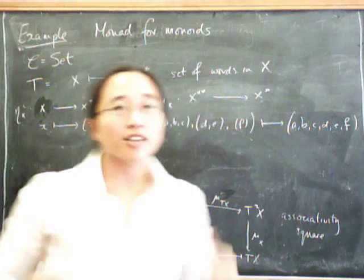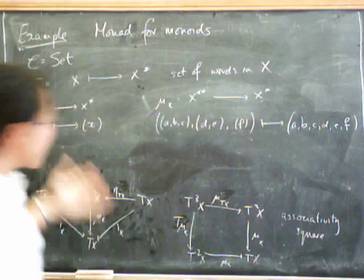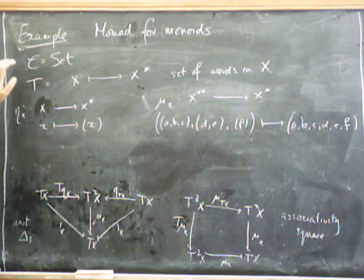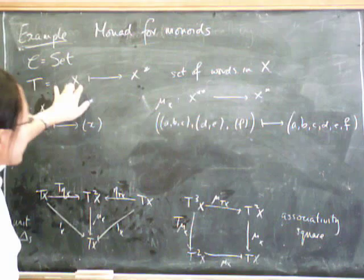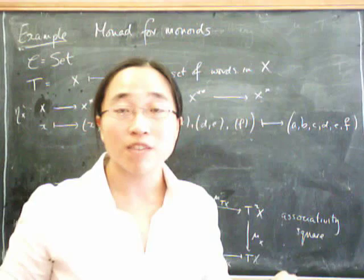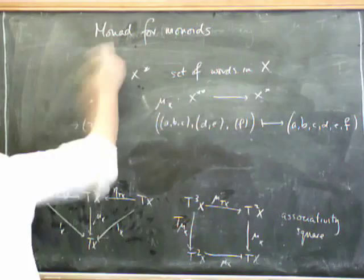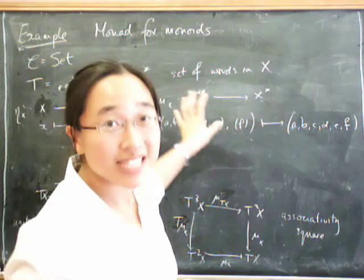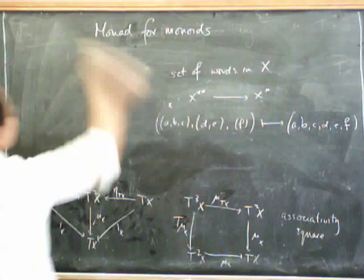So remember that the definition for a monad was that we had a functor on a category C together with natural transformations eta and mu, the unit and the multiplication, satisfying these two diagrams here. And we said that the monad for monoids was this one here where we're working in sets and we've taken the action of the functor to take a set X to the set of words in elements of X. So it remains to be seen what on earth these axioms are saying, and remember that they're not talking about the unit and the associativity of the monoid. That has somehow been encoded into the definition of T already. So let's leave these diagrams here and have a look at what they're saying.